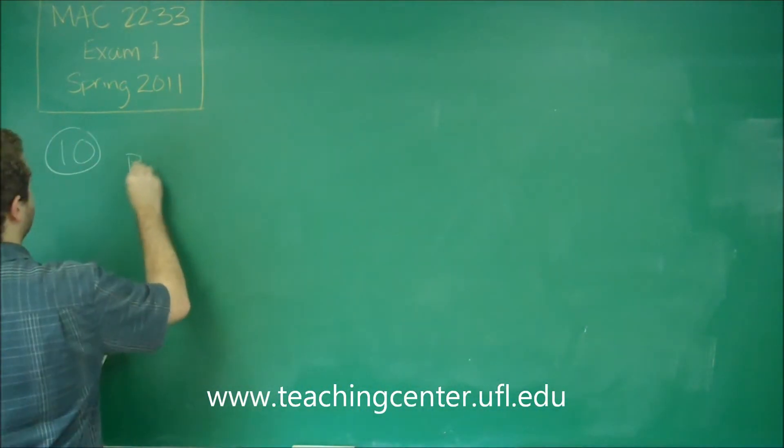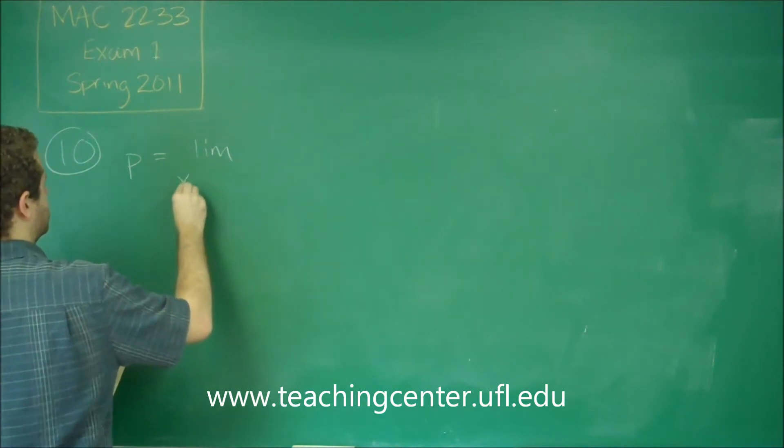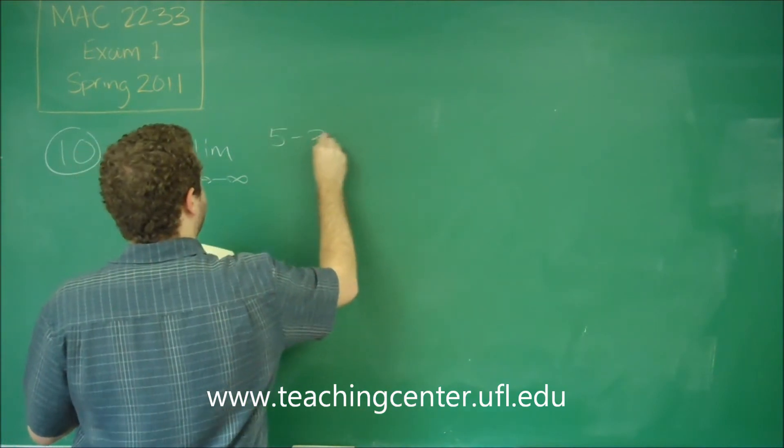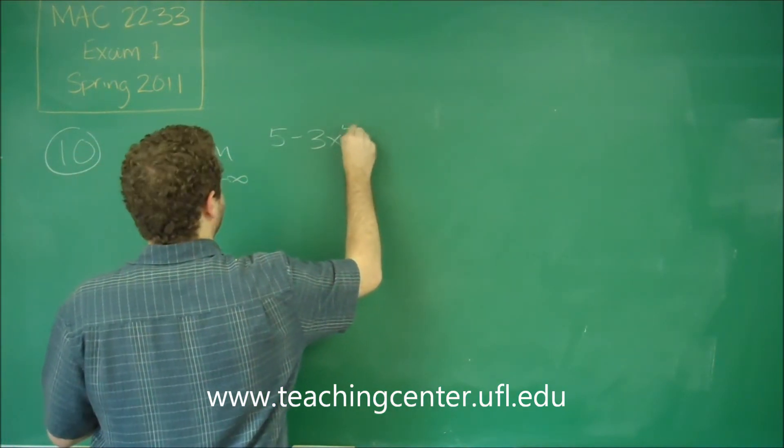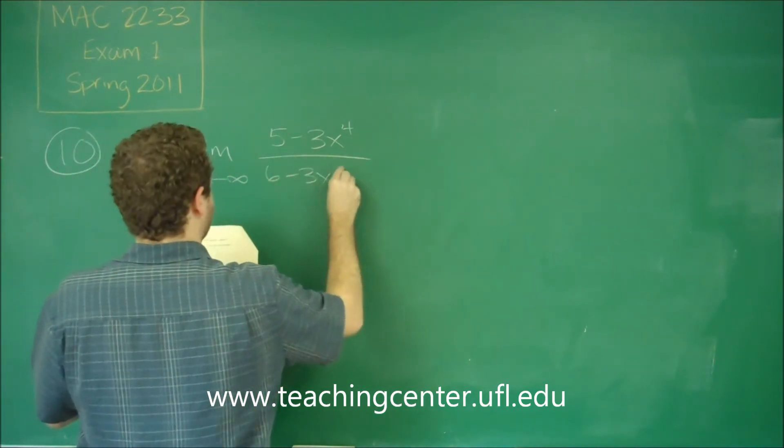So P is the limit, and this part is very important, as X goes to negative infinity. And we have 5 minus 3X to the fourth, over 6 minus 3X plus X cubed.